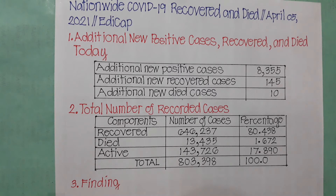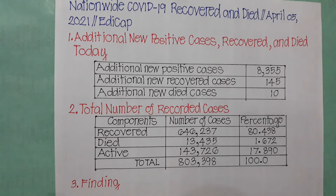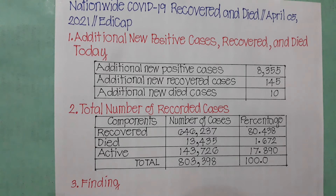Mission-wide COVID-19 recovered and died, April 5, 2021 at 4 o'clock in the afternoon. Part one: additional new positive cases were 8,355. Additional new recovered cases, 145. And additional new died cases, 10.